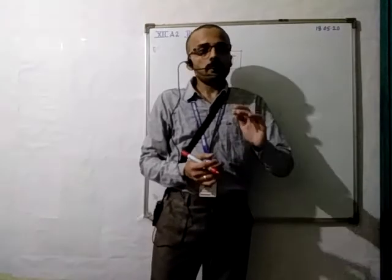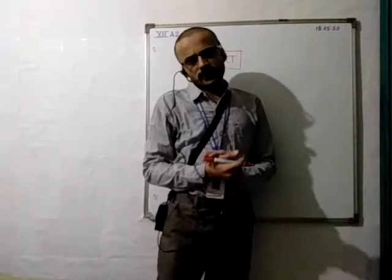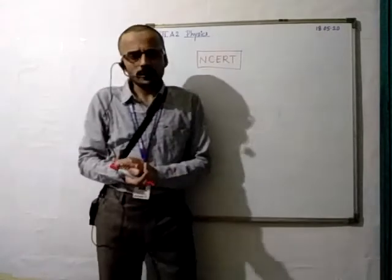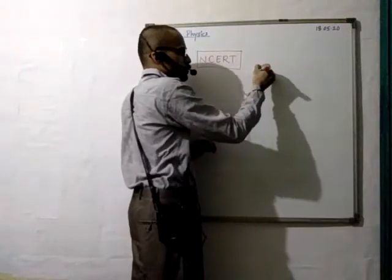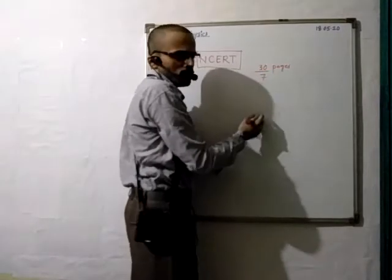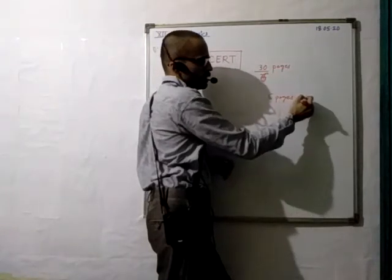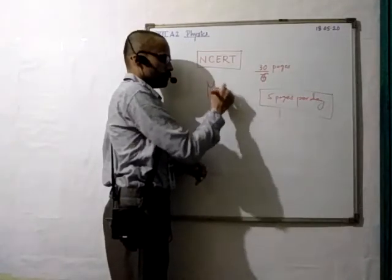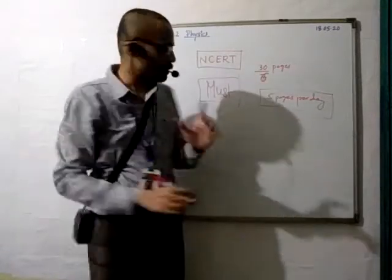NCERT reading you have to do at least once a week — or little by little throughout the week. If the chapter has 20–30 pages, divide it — divide by 7 or divide by 6. So about 5 pages per day you must read. Otherwise it will not be possible.